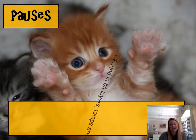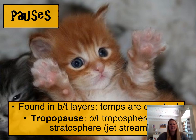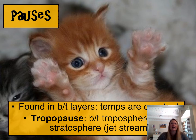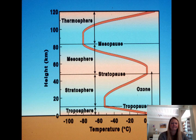There are also in-between layers called pauses, which tend to be areas of stable conditions. The in-between layer between the troposphere and the stratosphere is called the tropopause, and the in-between layer between the stratosphere and the mesosphere is called the stratopause. That image of the atmospheric layers is something I would highly suggest you memorize.